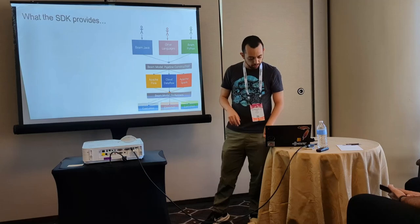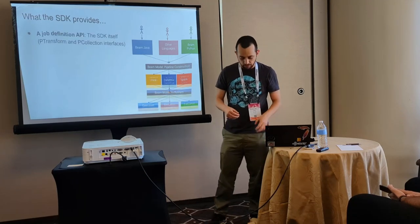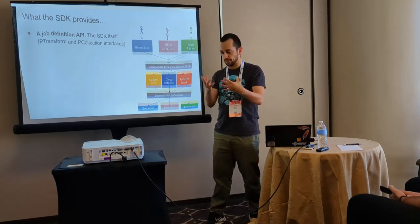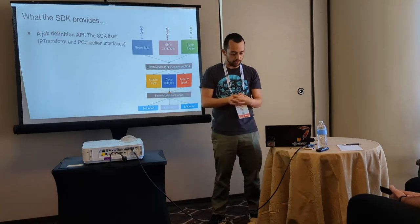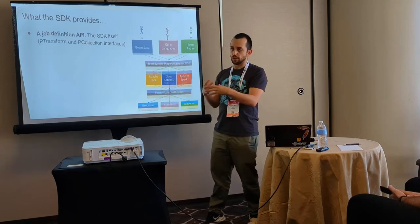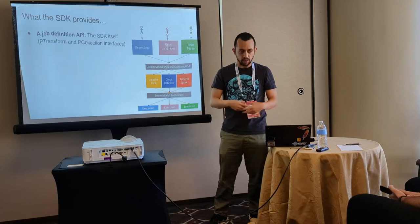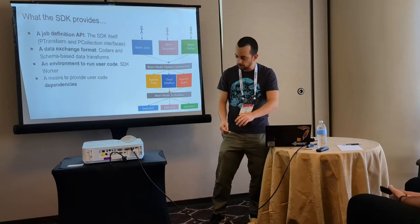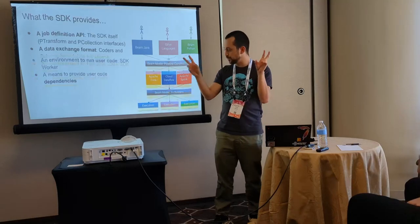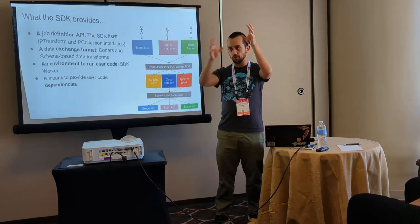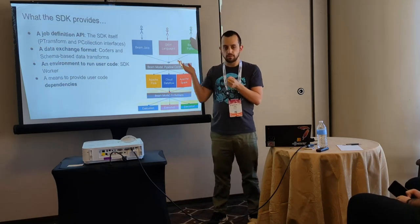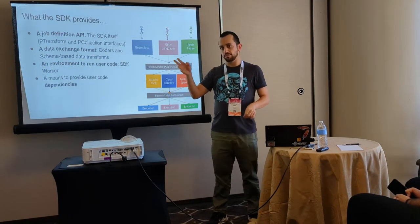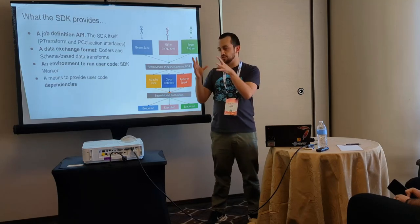Those are the things the runner provides. What the SDK provides — at some point we started thinking about building a new TypeScript SDK, and once we had built these abstractions, there are five things one has to implement to have a new language supported on Beam. First is the job definition API: you define a graph of operations, a series of transformations you do to your data. This is what you use in the language of choice to write your data processing job — in Spark, it'll look like map, flatMap, and so on.